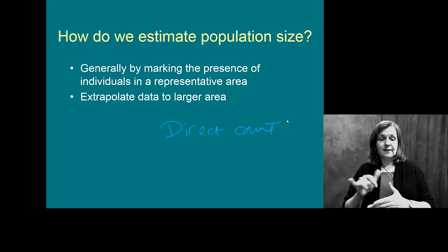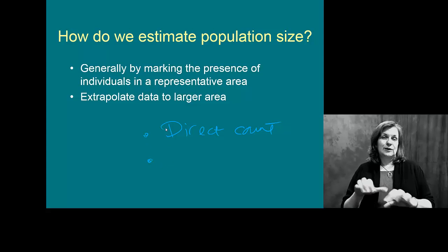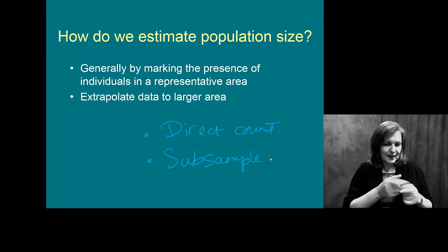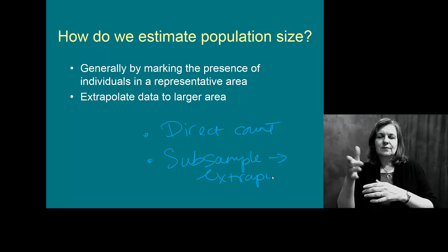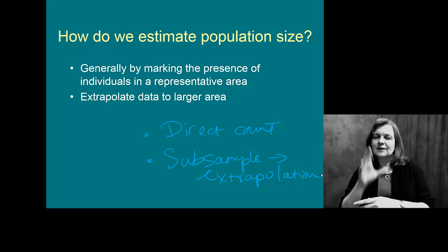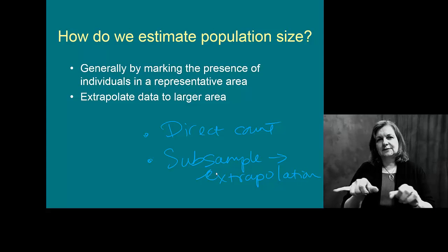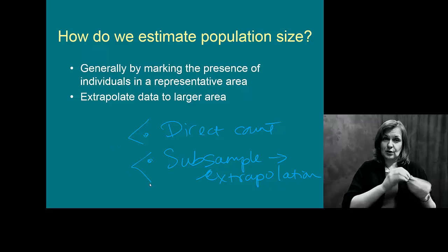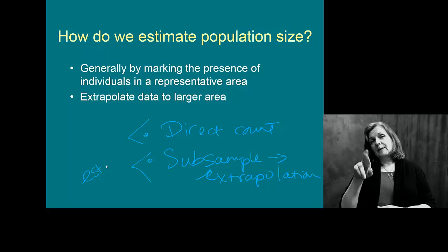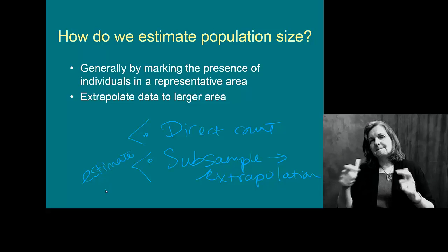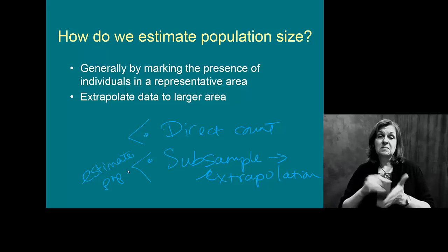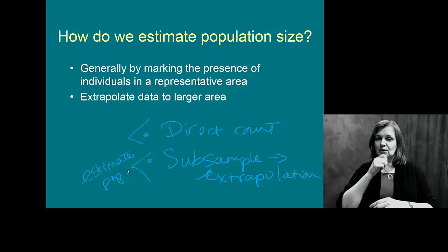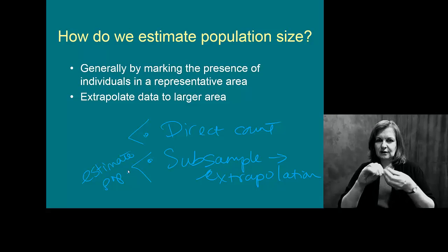You probably don't want to try to count every ant in the parking lot at the mall. So we do things that allow us to subsample, get a count, and then do what we call extrapolation. A direct count gives you a much stronger number, while subsampling and extrapolating gives you an estimate of the population — and sometimes that's good enough.